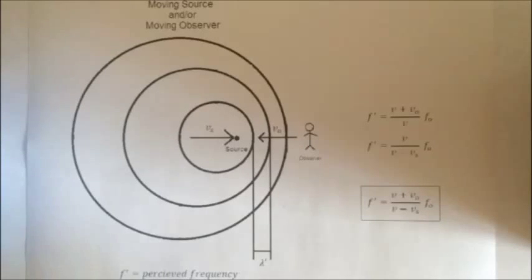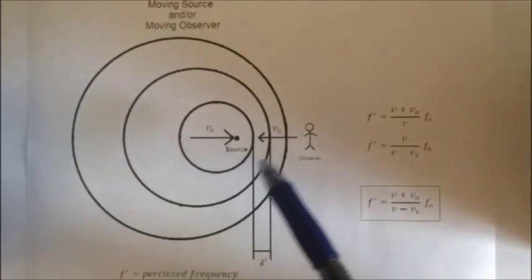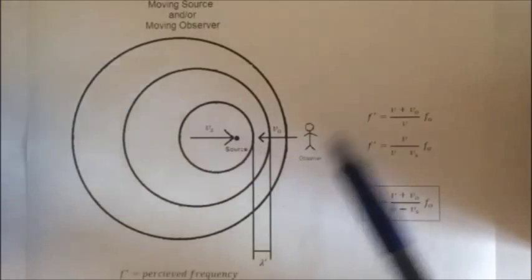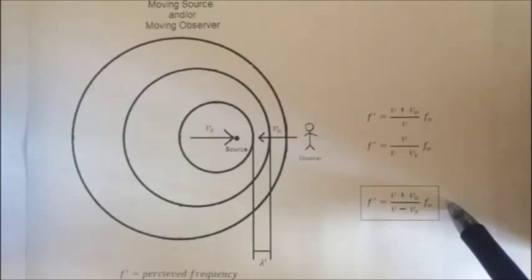Putting both situations together, when there is a moving source and or a moving observer, the two equations can be combined into one final one that can represent any situation.